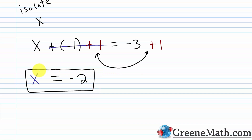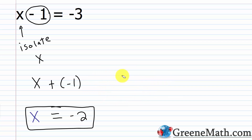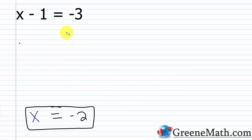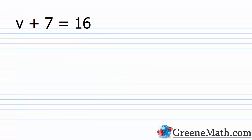Now I need to check by taking the value I got for x and plugging it into the original equation. Once I simplify, the left and right sides should be the same. Plugging in negative 2: negative 2 minus 1 equals negative 3, which gives negative 3 equals negative 3. So x equals negative 2 is correct.